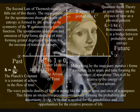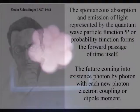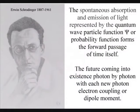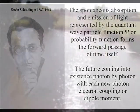This theory is based on just two simple postulates. The first postulate is that the spontaneous absorption and emission of light, represented by the quantum wave-particle function, or probability function, of quantum mechanics, forms the forward passage of time itself,